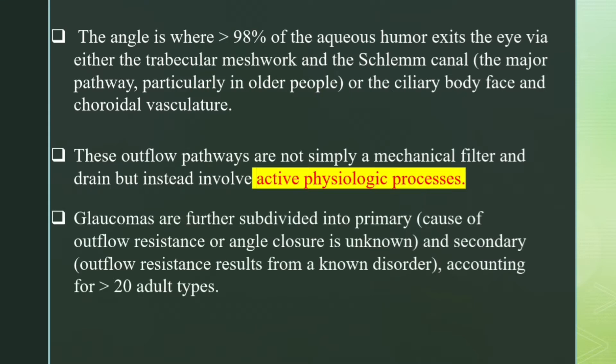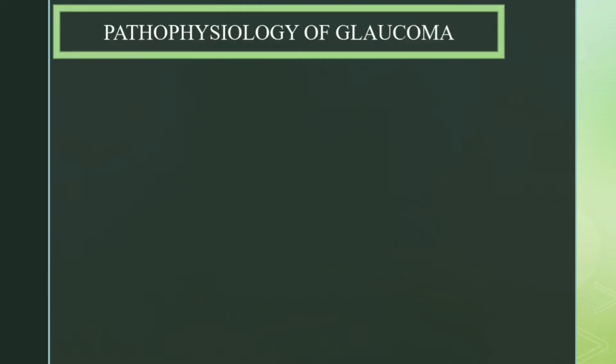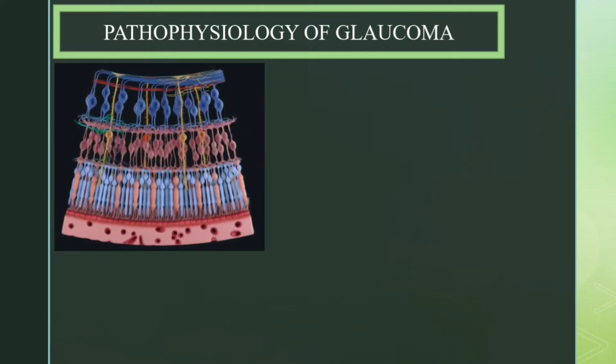Glaucomas are further subdivided into primary, where the cause of outflow resistance or angle closure is unknown, and secondary, where outflow resistance results from a known disorder. Now let's talk about the pathophysiology.